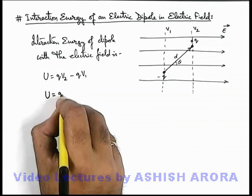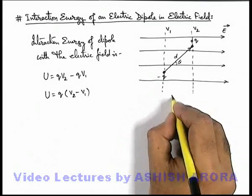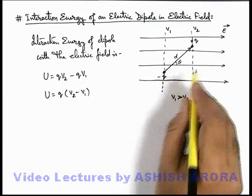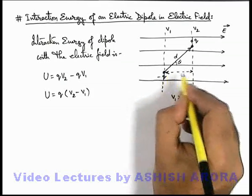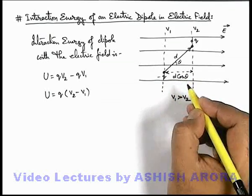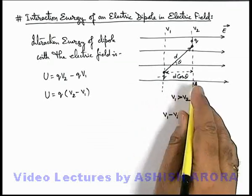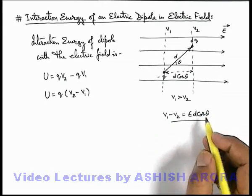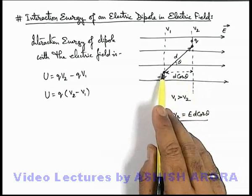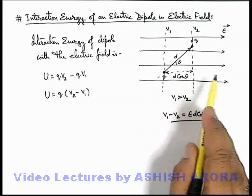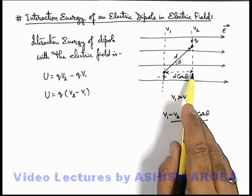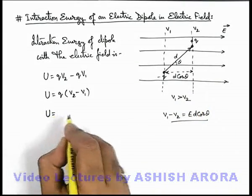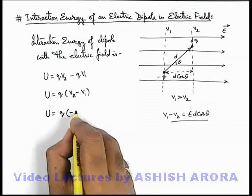The potential energy of the system can be written as q(V2 minus V1). Here V1 will certainly be more than V2 because in the direction of the electric field, potential decreases. As it is a uniform electric field, the separation between equipotential surfaces can be written as d·cosθ, and so the potential difference V1 minus V2 equals E·d·cosθ. Therefore, q(V2 minus V1) equals minus q·E·d·cosθ.